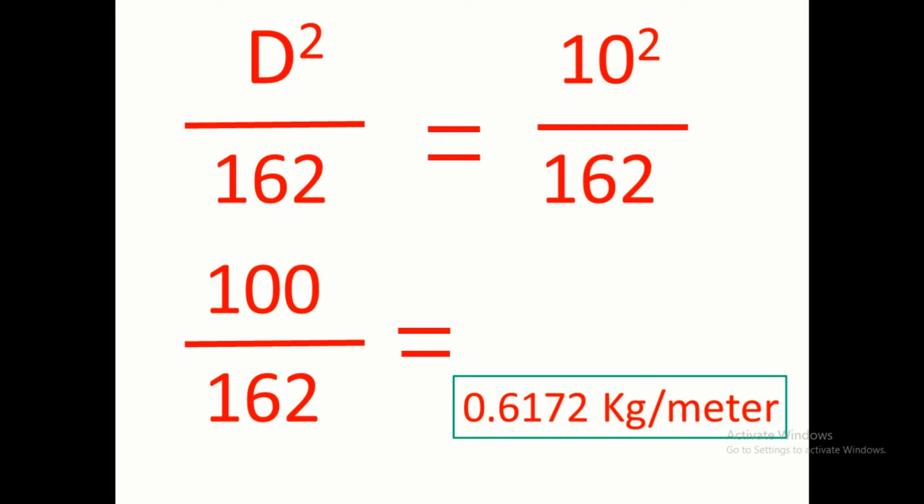One thing I want to make clear is that this 0.6172 kg per meter is the weight of the 10 mm bar per meter length of bar, that is for one meter length of the bar.